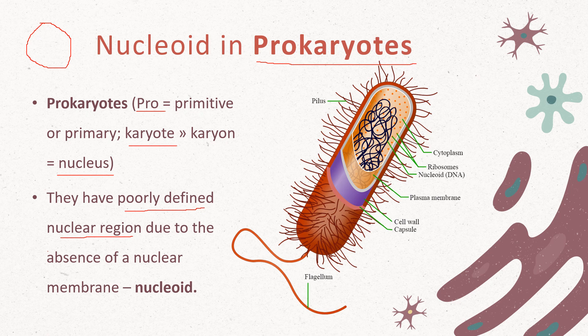In eukaryotic cells, DNA is separated from the cytoplasm because of the presence of the nuclear membrane. But since the nuclear membrane is absent in prokaryotes and the nuclear region is not well defined, we call this structure a nucleoid. Here is a prokaryotic cell — a rod-shaped bacterium. It has a flagellum and finger-like projections known as pili (singular: pilus). Inside the cytoplasm, DNA lies naked. The dotted structures inside are ribosomes — the only organelle present here.